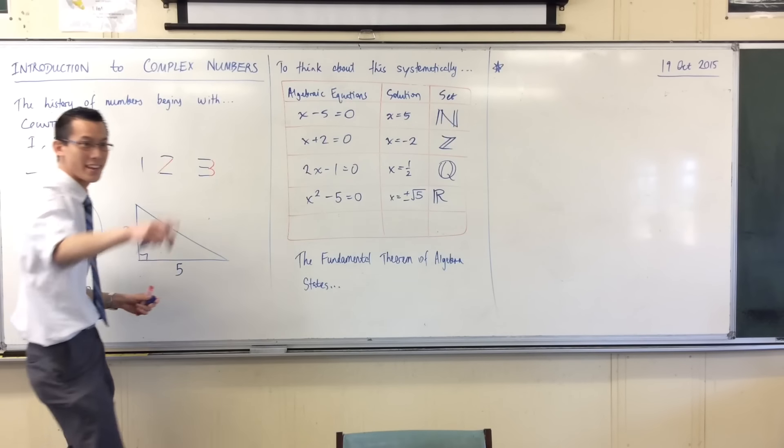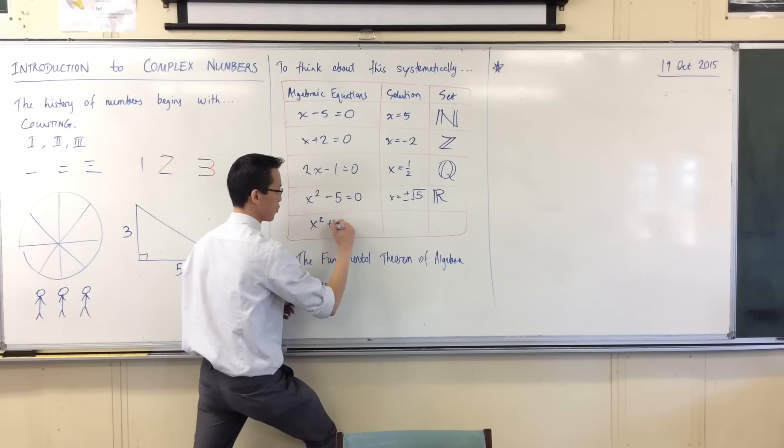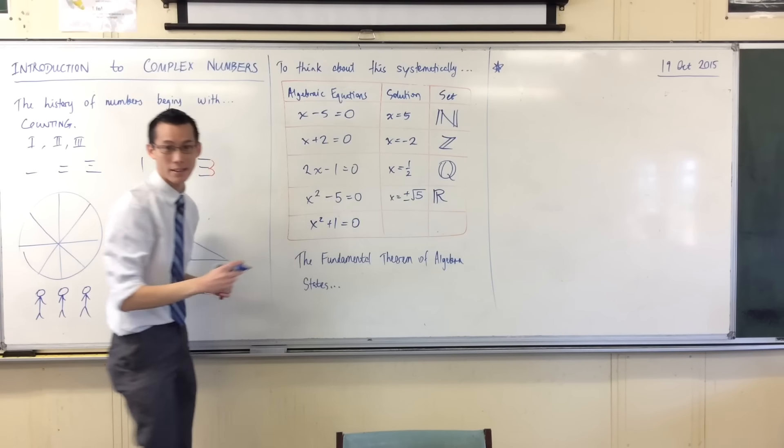I'll let someone say x squared plus 1 equals 0. Okay, this will be, I mean, they're all just examples, right? x squared plus 1 equals 0.